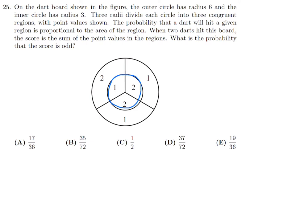First, find the area of each region. The small circle has area π r² = 9π. Each of its three congruent regions has area 9π ÷ 3 = 3π. So each inner region is 3π.